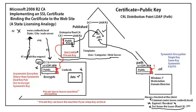Hey everybody, welcome to this presentation on Microsoft 2008 R2 CA and implementing an SSL certificate. In this video, we've already bound the certificate to the website, so we're past that, but we're still going to work with the state licensing analogy to have it make sense. I want to focus on the under-the-hood kind of how things work — what's actually going on when I make that connection finally to the website.